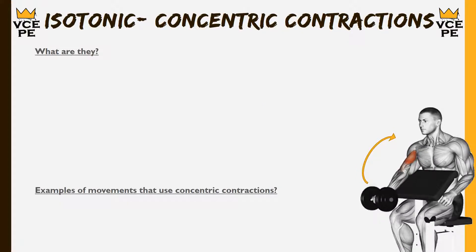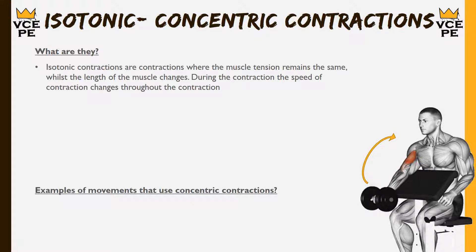The first contraction type we're looking at is a concentric contraction, which is a form of isotonic contraction. An isotonic contraction is one where the muscle tension remains the same throughout the movement but the length of the muscle changes, meaning movement is occurring. The contraction speed does change throughout the range of motion due to the mechanical advantage of the levers being used — the load becomes easier or harder to move depending on the position of the lever.